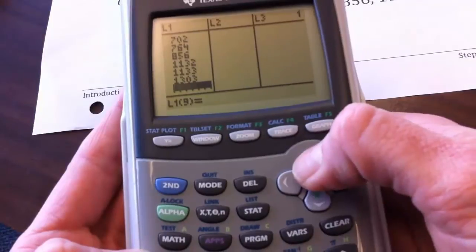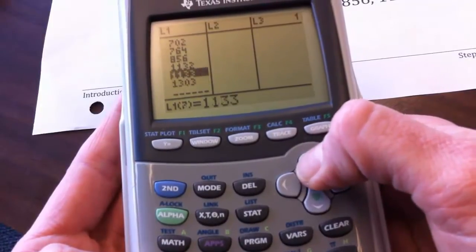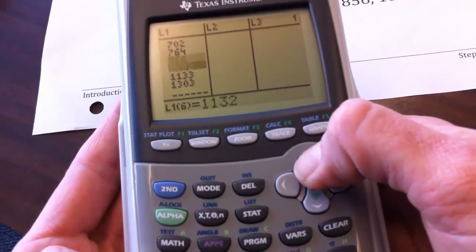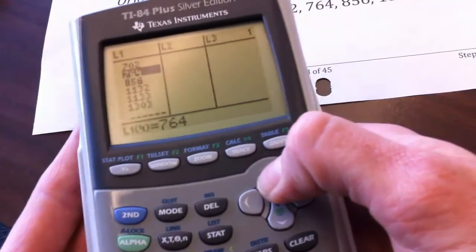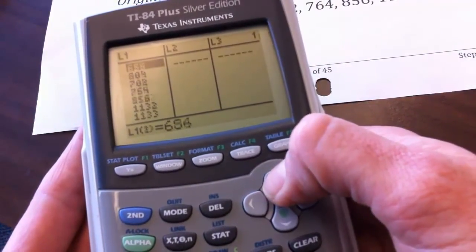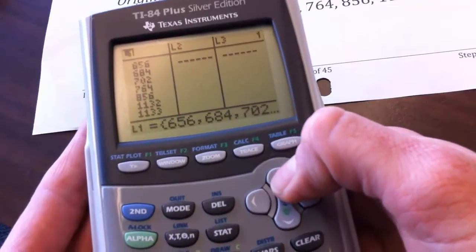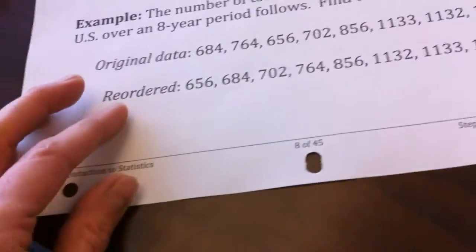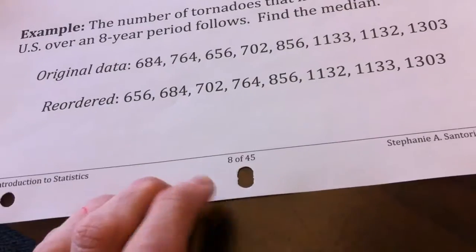It's always a good idea to check yourself, so you can use these little arrow keys to page back up. So I have 1303, 1133, 1132, 856, 764, 702, 684, and 656. That matches with the data that we had in our handout on page 8.